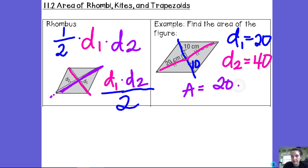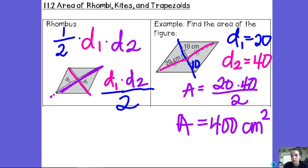And so now to find the area of this rhombus, I'm just going to do diagonal 1 times diagonal 2, all of that over 2. 20 times 40 is 800. 800 divided by 2 is 400, so it's 400, and then it's area, so it's centimeters squared.